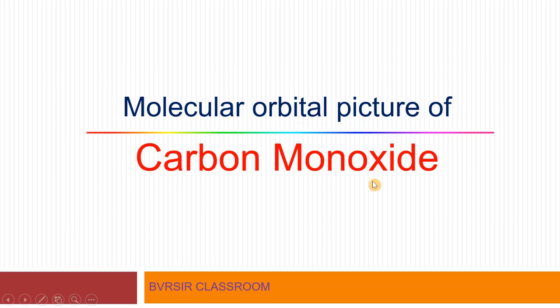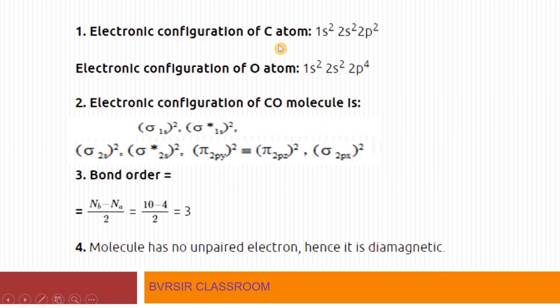Now we will study the molecular orbital diagram of carbon monoxide — this is already from past year level and I will repeat it. After this, we will talk about the backbonding concept in detail. Carbon monoxide molecular orbital diagram: the electronic configuration of carbon is 1s² 2s² 2p², and of oxygen is 1s² 2s² 2p⁴. The molecular orbital electronic configuration of carbon monoxide follows the nitrogen-type electronic configuration.